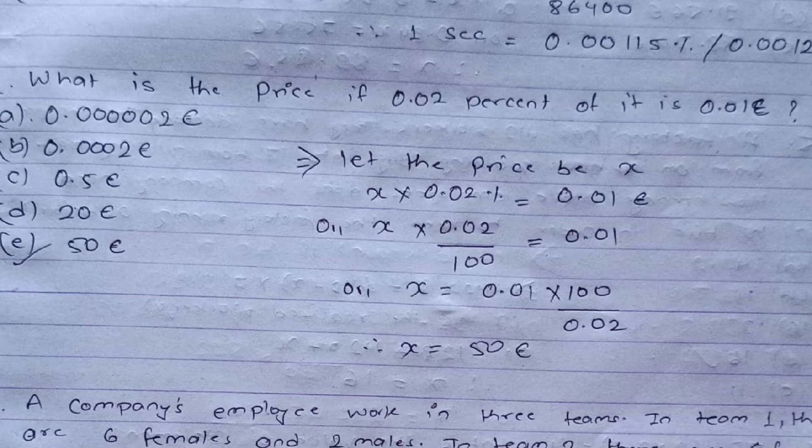Question two: what is the price if 0.02% of it is 0.01 euro? We assume the price to be x. So x times 0.02% equals 0.01 euro, meaning x times 0.02 divided by 100 equals 0.01. Therefore x equals 0.01 times 100 divided by 0.02, which gives x equals 50 euro. So the correct answer is 50 euro — 0.02% of 50 euro is indeed 0.01 euro.